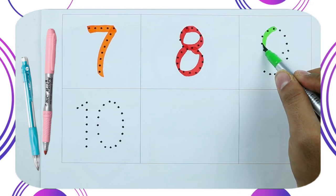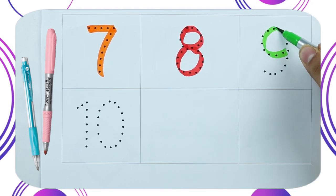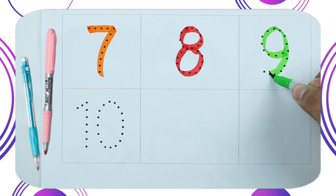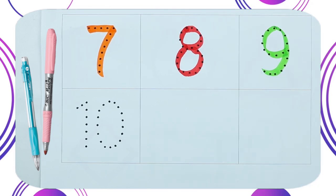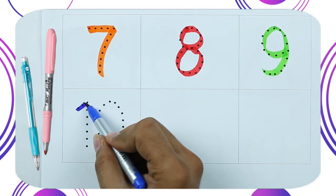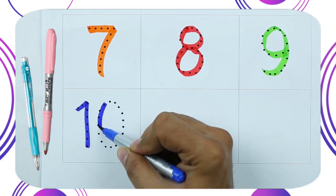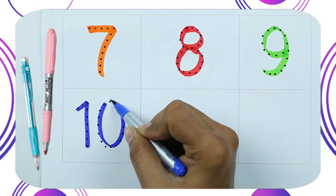Number 9 with green color. It's number 9. Number 10. Number 10, 1 and 0. It's number 10.